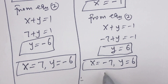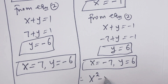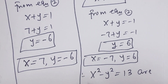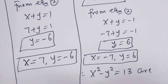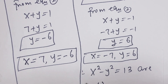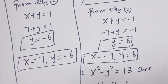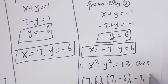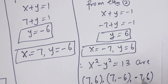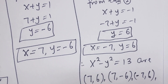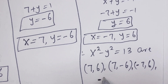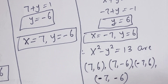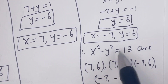Therefore, the integer solutions for x squared minus y squared equals 13 are: x equals 7, y equals 6; x equals 7, y equals minus 6; x equals minus 7, y equals minus 6; and x equals minus 7, y equals 6. These are all the integer solutions for this equation.